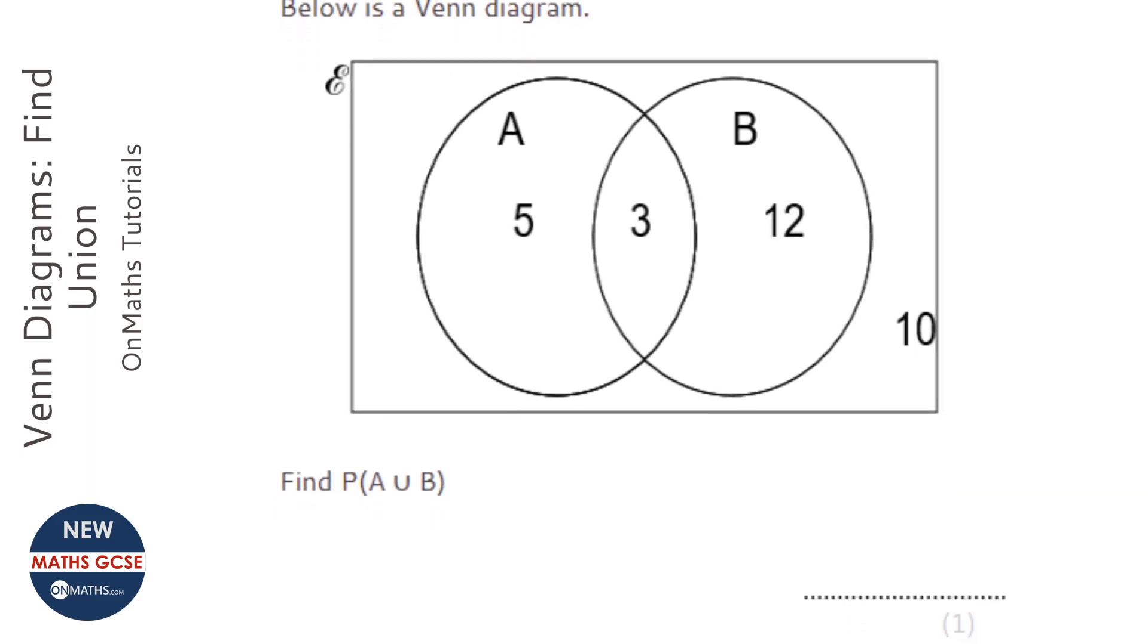Okay, so first of all we have to understand what the question is asking. P bracket means probability of. This symbol here is a union.